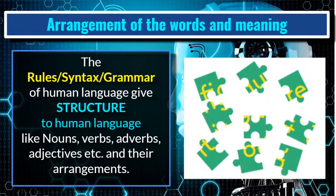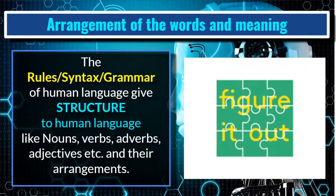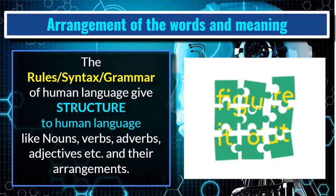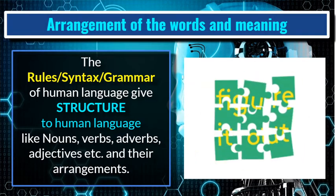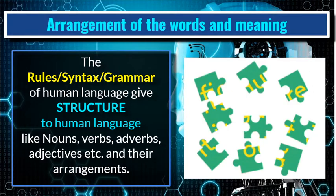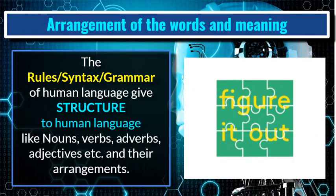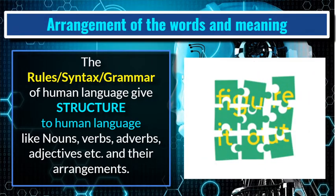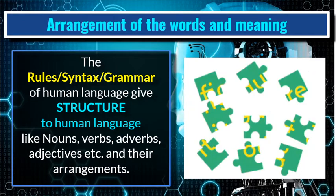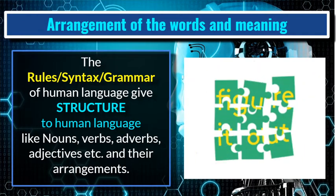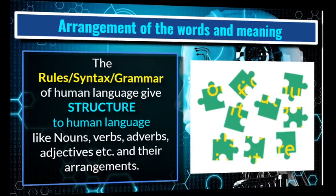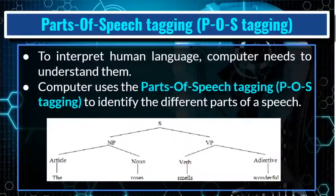The rules of syntax and grammar of human language give structure to it — nouns, verbs, adjectives, adverbs and their arrangement all make sense in this structure of human language. Now, how does a computer do this? This is an example of POS tagging — one way a computer interprets human language.